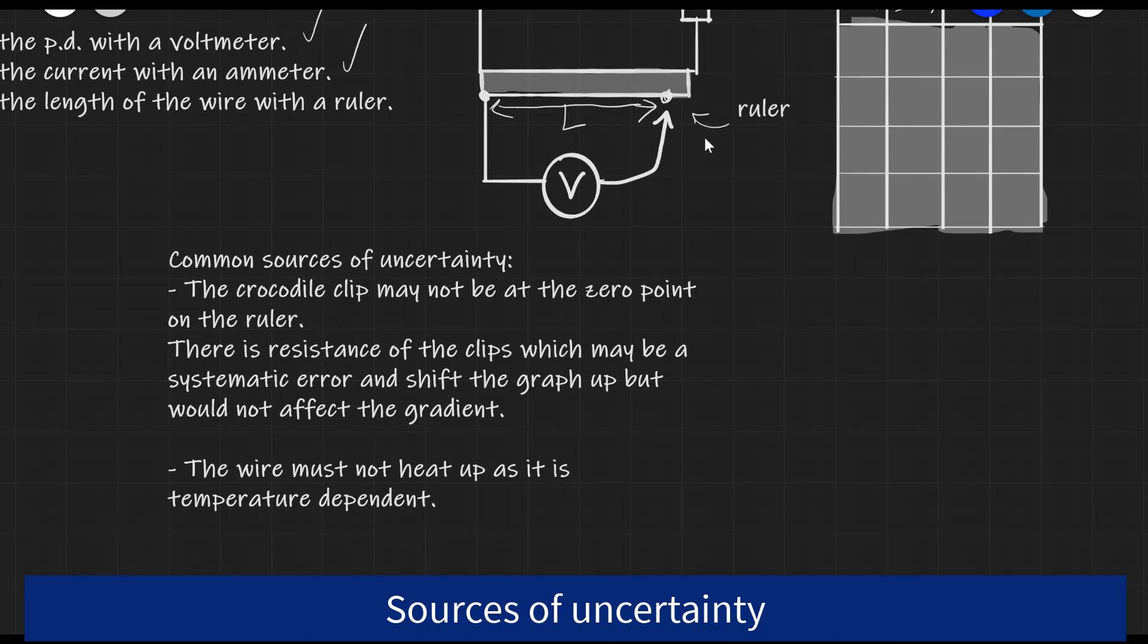What are some common sources of uncertainty in this experiment? First off, the crocodile clip may not be at the zero point on the ruler. This is the most common one that I've noticed while teaching this subject.